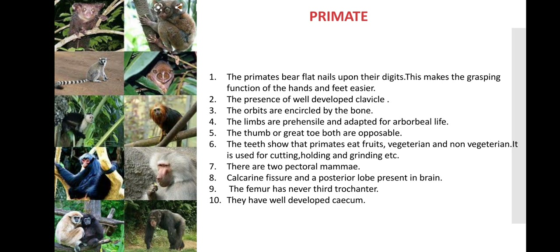Not all primates are arboreal. Some are arboreal and some are terrestrial. Because there are animals ranging from a cat to a human — all are primates. There are some primates living on land, some on trees, and some can exist on both land and trees. But there are some body morphology features, the main characters, which show that these are primates. This is the main characters or features of primates.